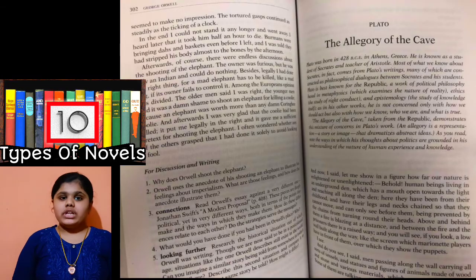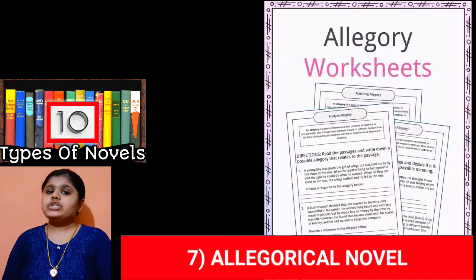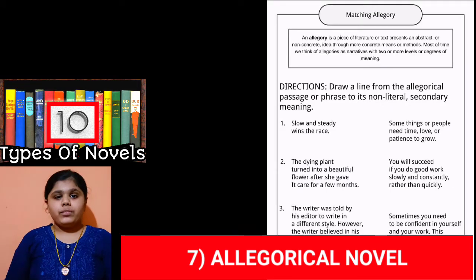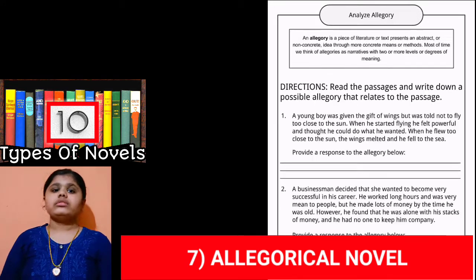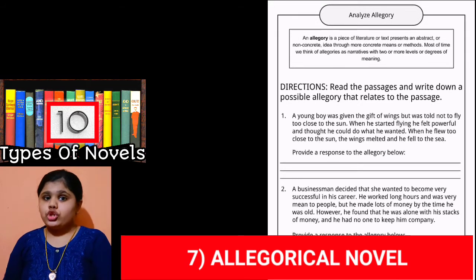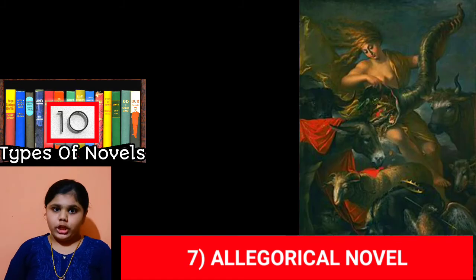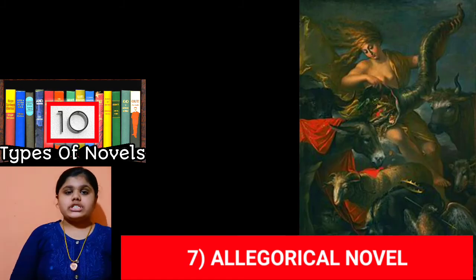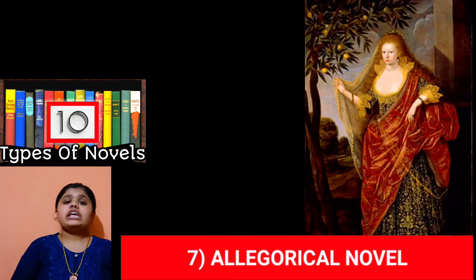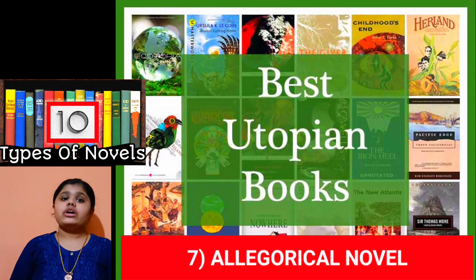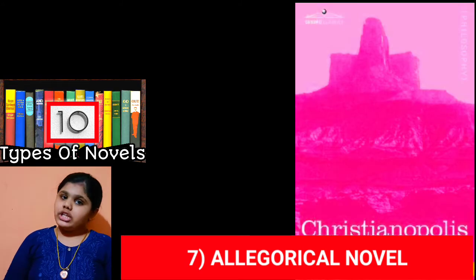The seventh type of novel is the allegorical novel. An allegory is a story that bears more than one level of meaning. The surface meaning of such a novel is different from its symbolic meaning. The symbolic meaning of an allegory may be philosophical, historical, political, or religious.